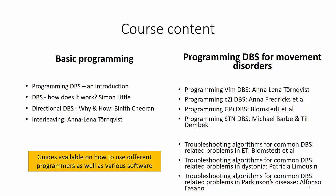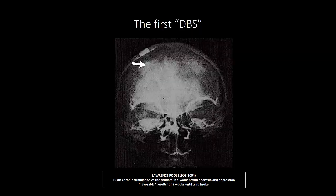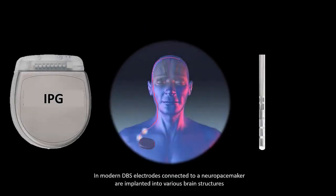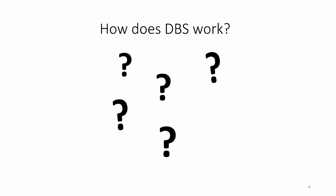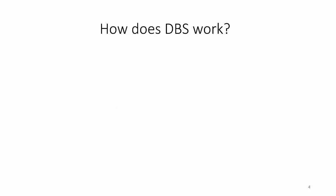Let us now continue with this introduction, where we'll cover the very basics of deep brain stimulation. The first case of deep brain stimulation in human was performed non-stereotactically in 1948, and stimulation became an important tool for intraoperative evaluation before performing stereotactic lesions. More than 30 years ago, modern deep brain stimulation with completely implantable systems was introduced and has since been applied to various brain targets for many different conditions.